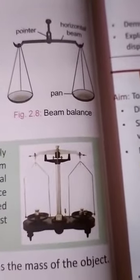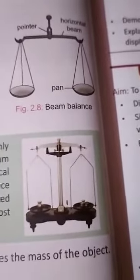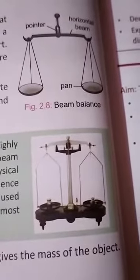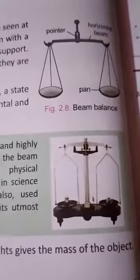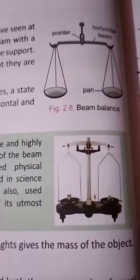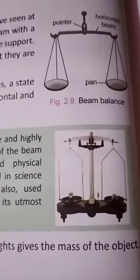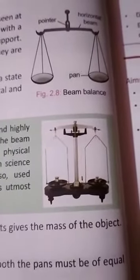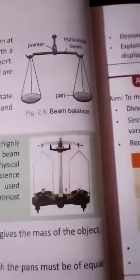When we are taking the measurement, we should ensure two things. Both the arms of the beam balance must be of equal length and both the pans must be of equal mass. When both the pans are empty, the beam should be horizontal and the pointer should be vertical.